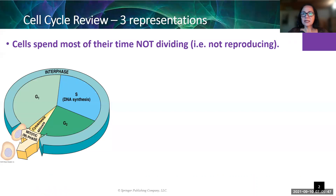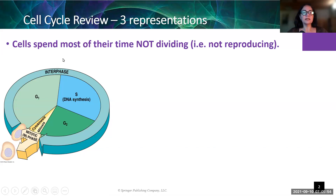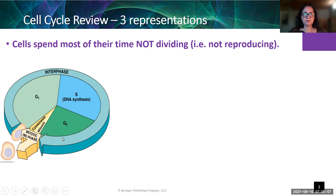This diagram we saw when we were in the genetics chapter. It turns out in the cell cycle, the cells spend most of their time not dividing. They're actively dividing during the mitotic phase, but cells spend most of their time in interphase — and specifically, they spend their time in what's known as G1.